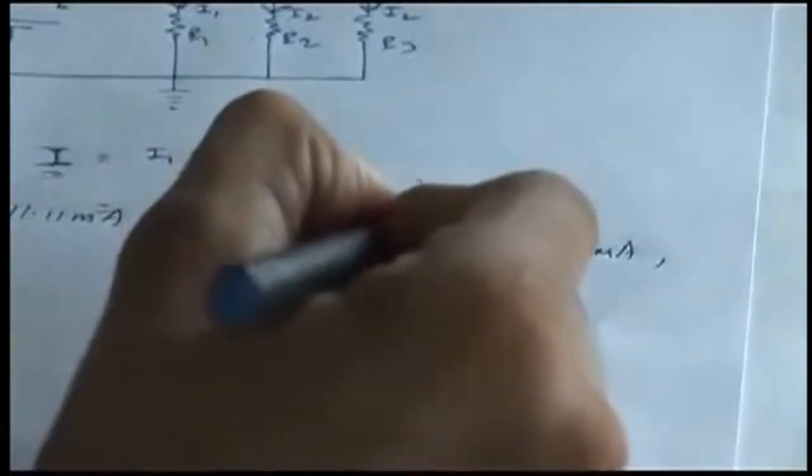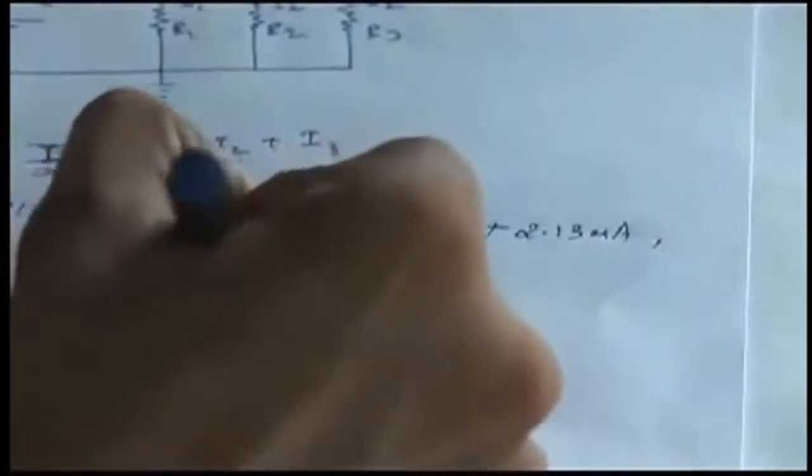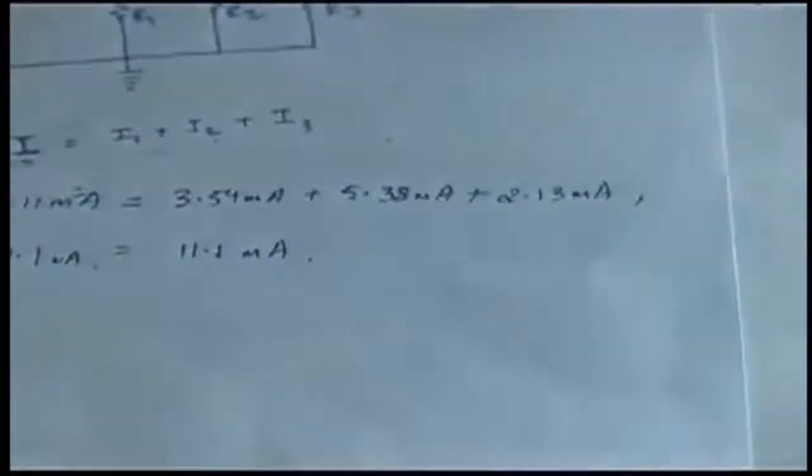So if I sum up this 3.54, 5.38 and 2.13, I am totally getting 11.1. So you are getting 11.1 as your incoming current milliampere and you are getting your outgoing current is also equal to 11.1. So this proves which law? All incoming current is equal to all your outgoing current. And how this again resembles to current division rule?